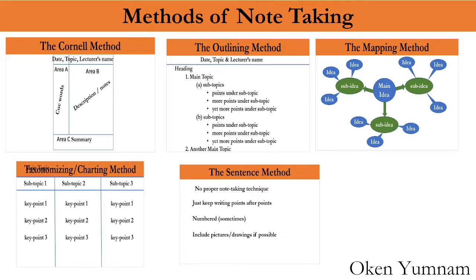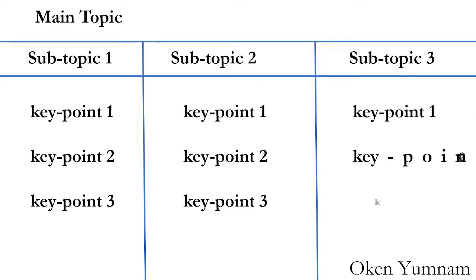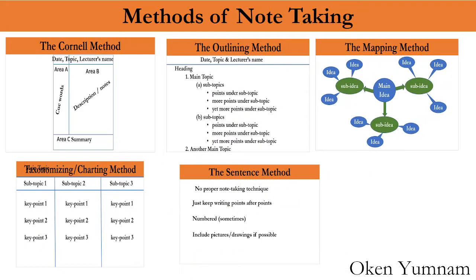Then number four, the charting method, which sometimes we call the taxonomizing method. Suppose main topic is here. We draw a table like this with three or more columns where we have subtopic one, two, or three. For each subtopic we have key points one, two, three. We keep on writing the points. Similarly for subtopic two, we keep on writing the key points, and we continue the same thing for the next subtopic also. This is how we do it in taxonomizing or charting method.